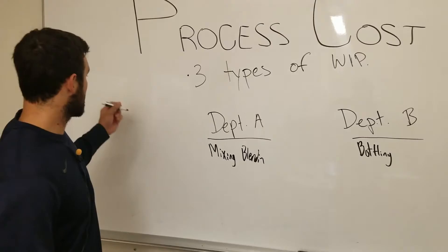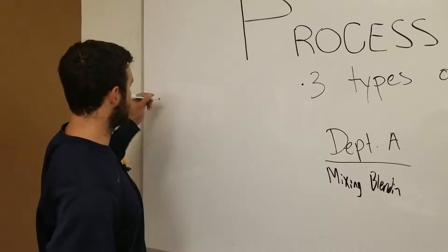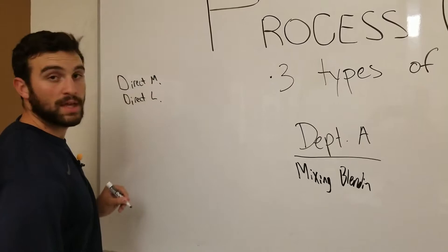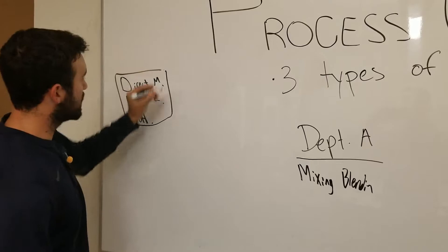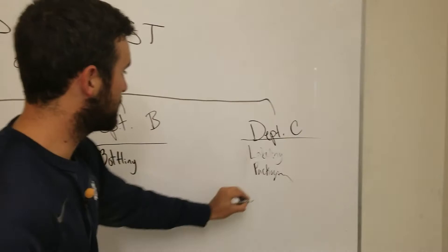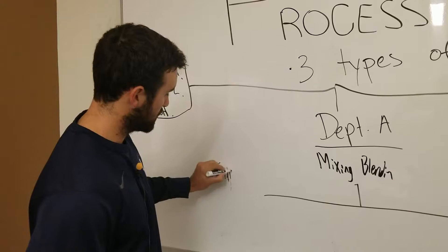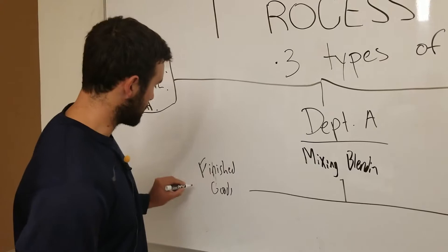You start with your direct materials, direct labor, and manufacturing overhead. From there, you go into these three WIPs. Then from these three WIPs, you will go into your finished goods. And then from your finished goods, you are now down to cost of goods sold.